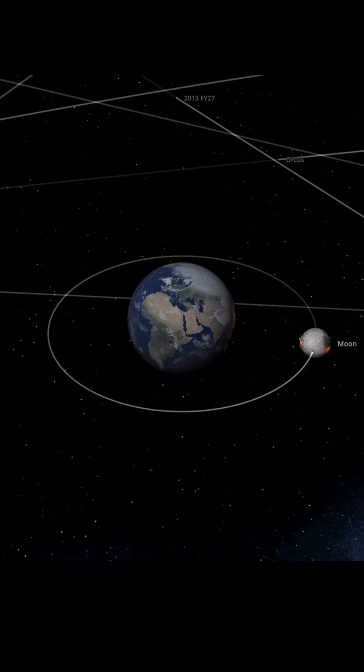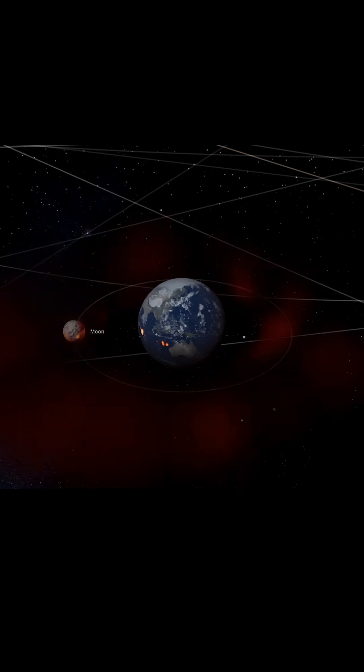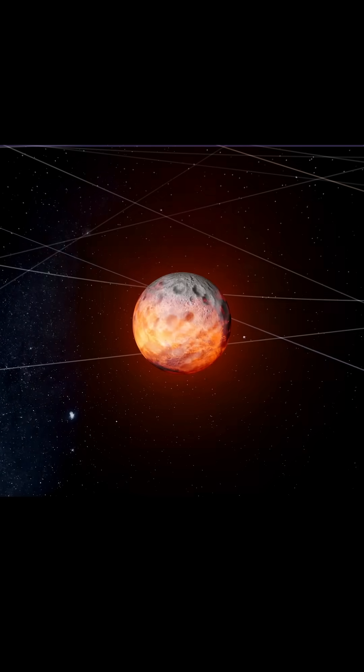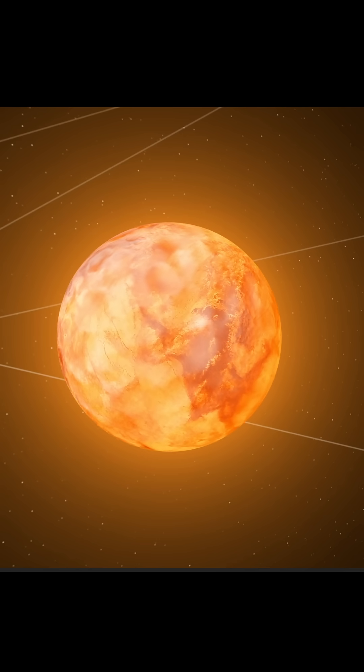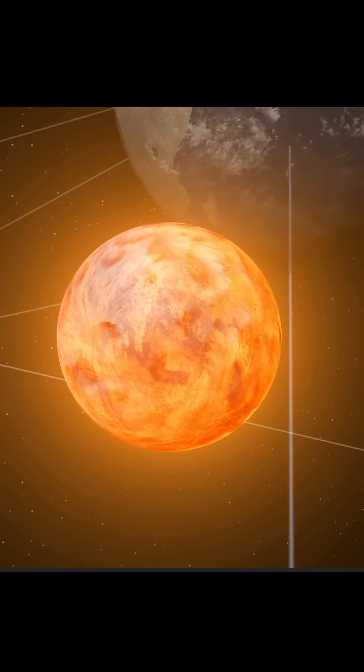Bringing the Moon this close means it would enter the Roche limit, where Earth's gravity would start pulling the Moon apart. This process would heat the Moon's surface to temperatures of up to 1,000 degrees Celsius or 1,800 degrees Fahrenheit, causing it to fragment.